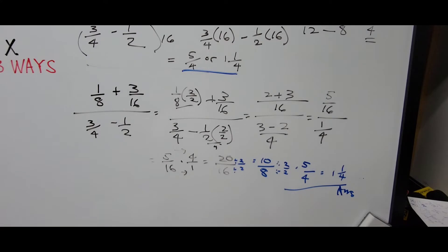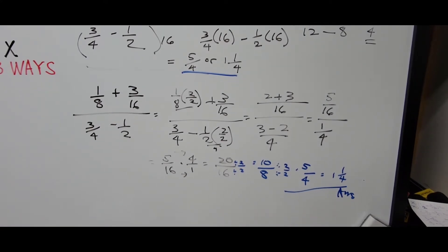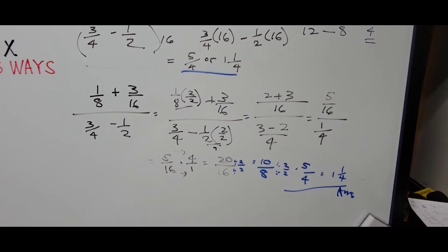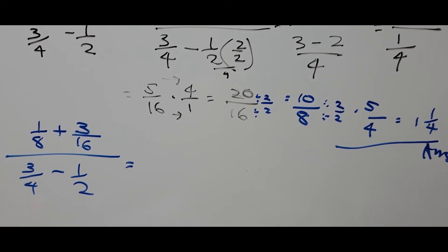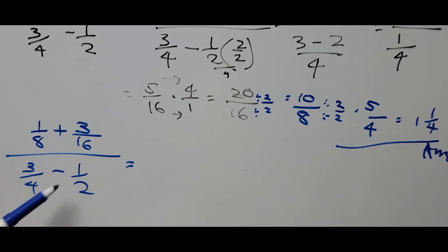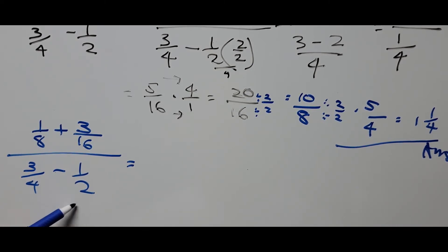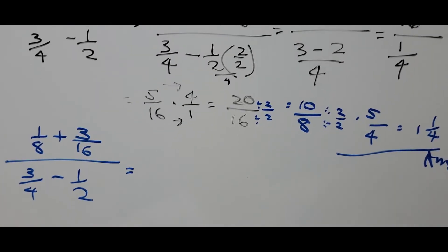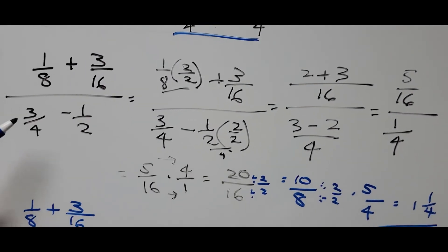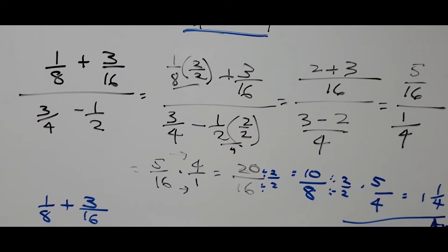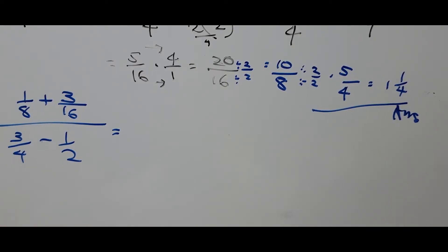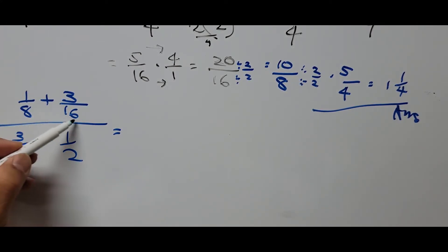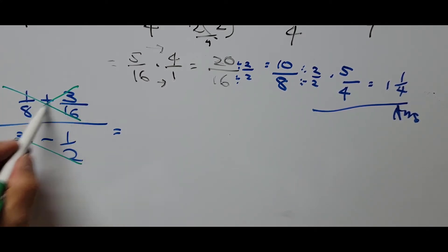There's a third way to solve this — the butterfly method. We rewrite the same problem: 1/8 plus 3/16, divided by 3/4 minus 1/2. In the butterfly method, you multiply all the terms criss-cross — multiply the numerator of the first term by the denominator of the second term, and vice versa. The denominators also get multiplied together.